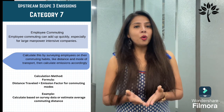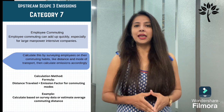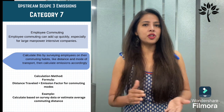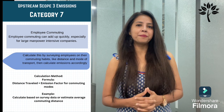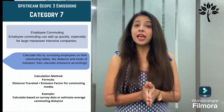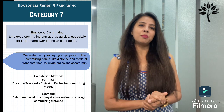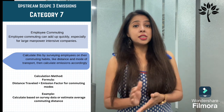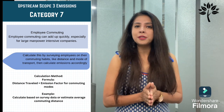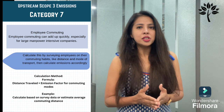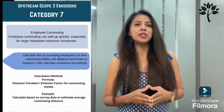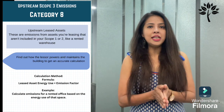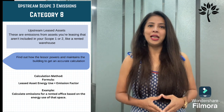Category 7 is employee commuting, which can add up quickly, especially for larger companies. Survey employees on their commuting habits — distance and mode of transport — then calculate emissions accordingly. The calculation method is: distance traveled × emission factor for commuting modes. Activity data is employee commute patterns including distance and mode. Emission factors are mode-specific; you can calculate based on survey data or estimate average commuting distance. Category 8 is upstream leased assets — emissions from assets you lease not included in scope 1 and 2, like a rented warehouse.